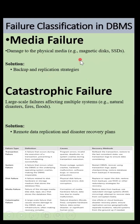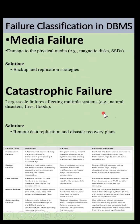Catastrophic failures occur due to fires, floods, and natural disasters like tsunamis. These are large-scale failures affecting multiple systems. Recovery happens from data replication servers — generally three servers are maintained across the globe, so when one server is damaged or fails due to a natural disaster, another server takes over.